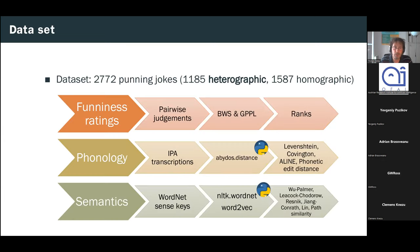So, first of all, we started with the data sets, and our data was based on a collection of punning jokes that I had originally compiled for the Seminoval 2017 workshop on the detection and interpretation of puns, which has since been greatly expanded. So, the subset of this corpus that we used consists of 2,772 English language punning jokes, of which 1,185 are heterographic, and therefore probably also heterophonic, and 1,587 of which are homographic, and therefore probably also homophonic.